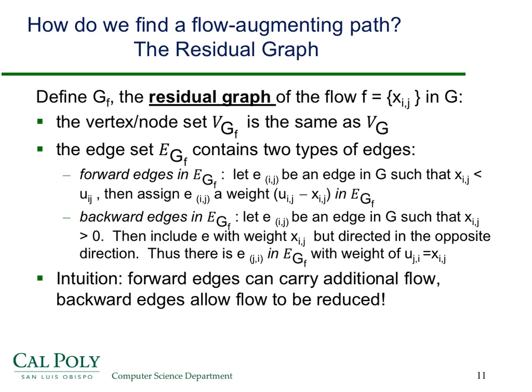We have to define what we mean by the residual graph — this is a really key concept. Given some flow F, defined by the amount of flow over each edge in the graph, we define the residual graph as follows: the vertices in the residual graph are the same as in G. The edge set is what changes. There are two types of edges. Forward edges more or less correspond to edges in the original graph, but with a different capacity: the original capacity minus the amount of flow. So forward edges represent how much room is left in each edge.